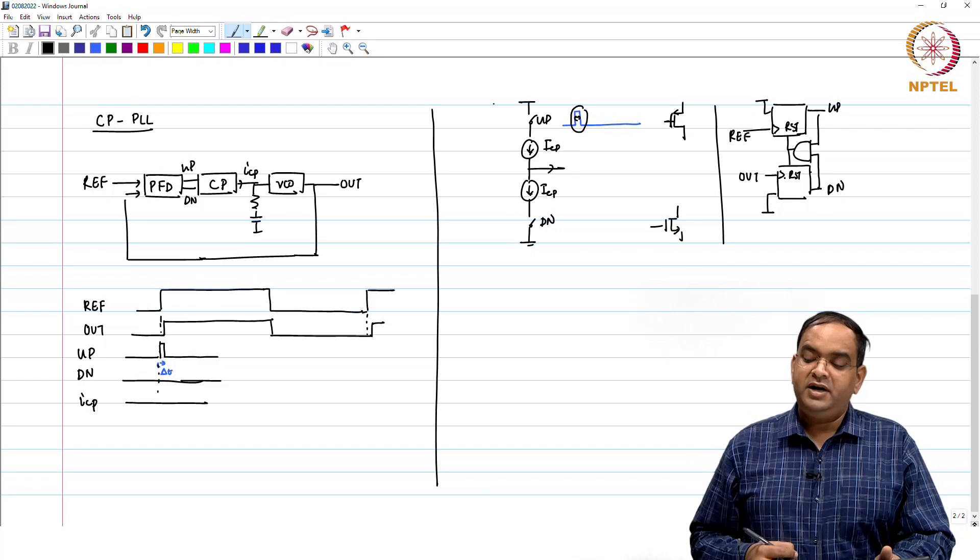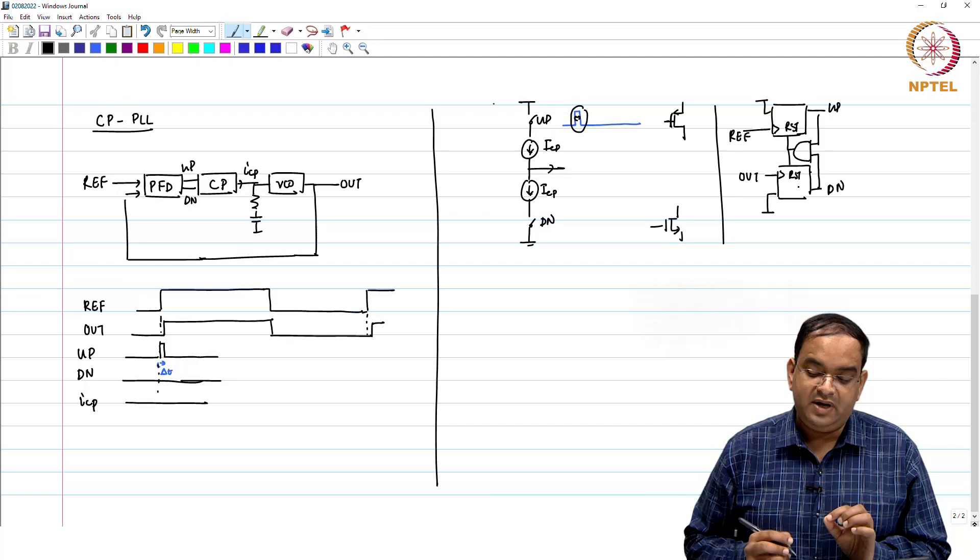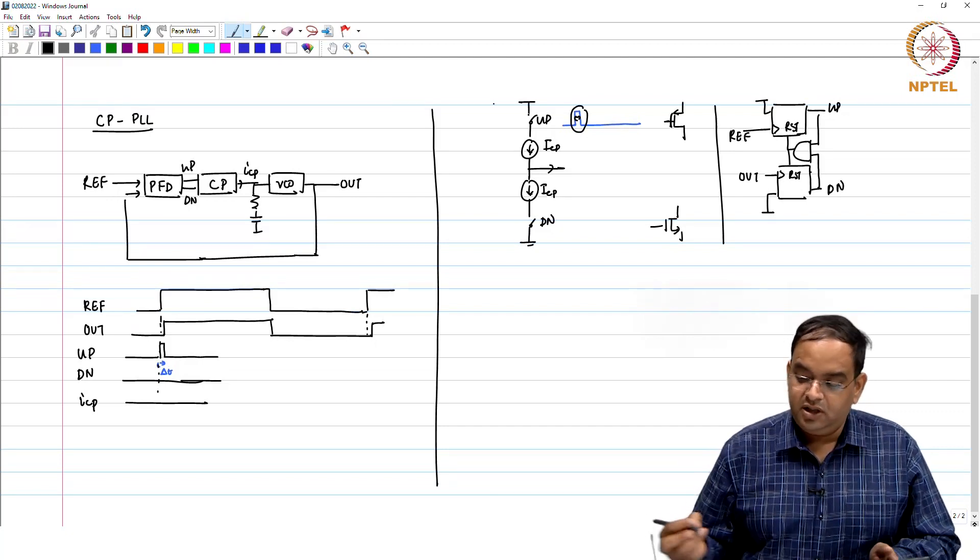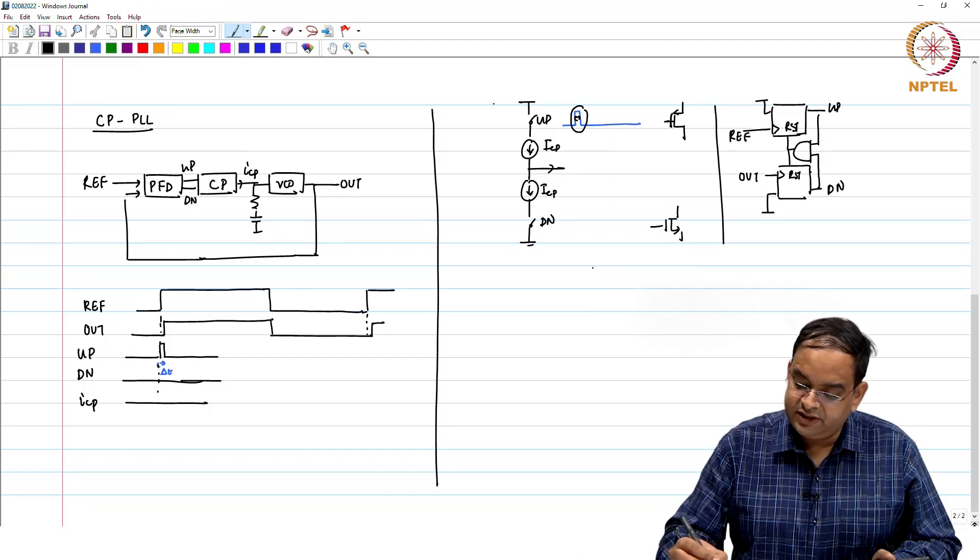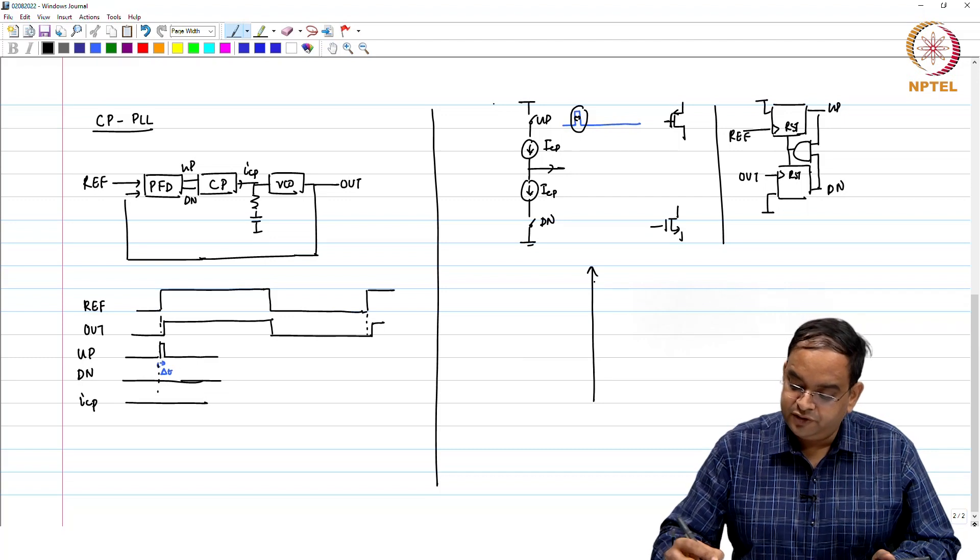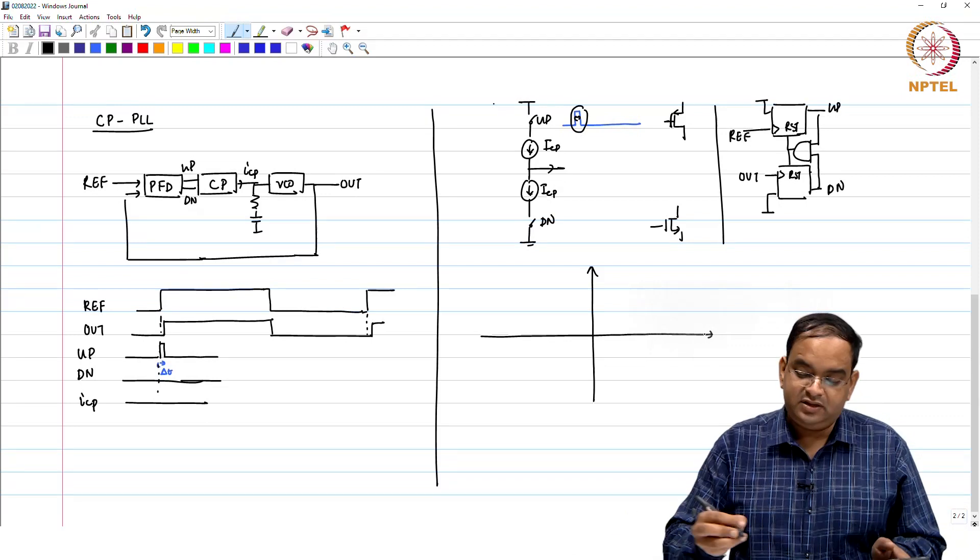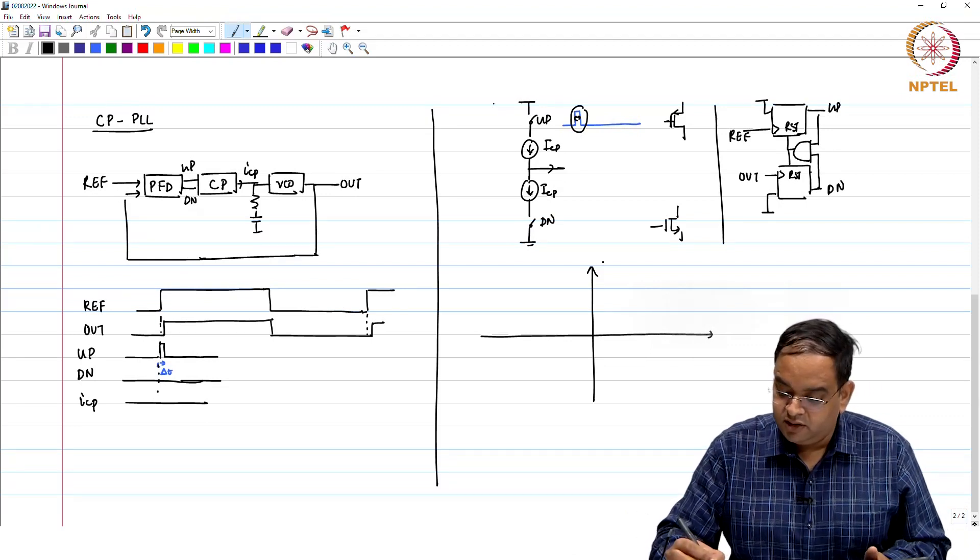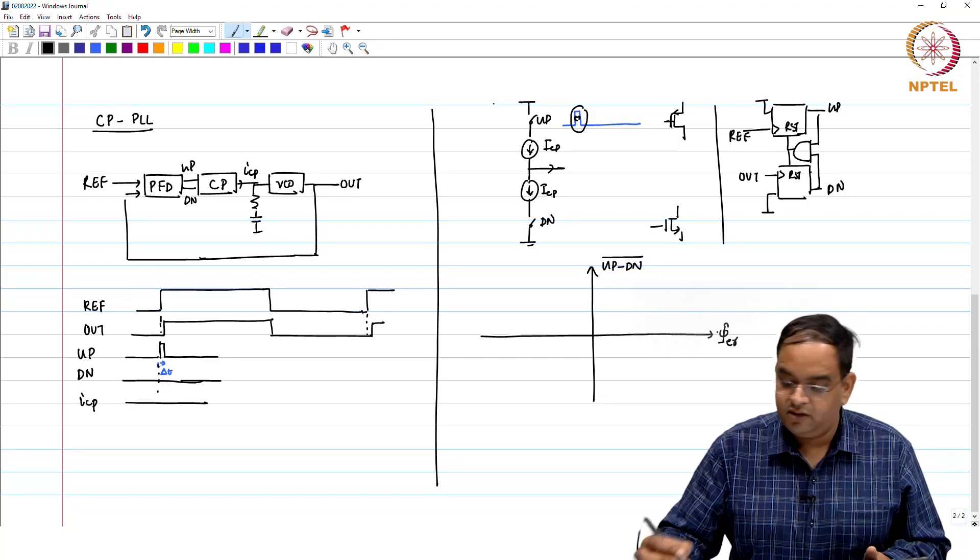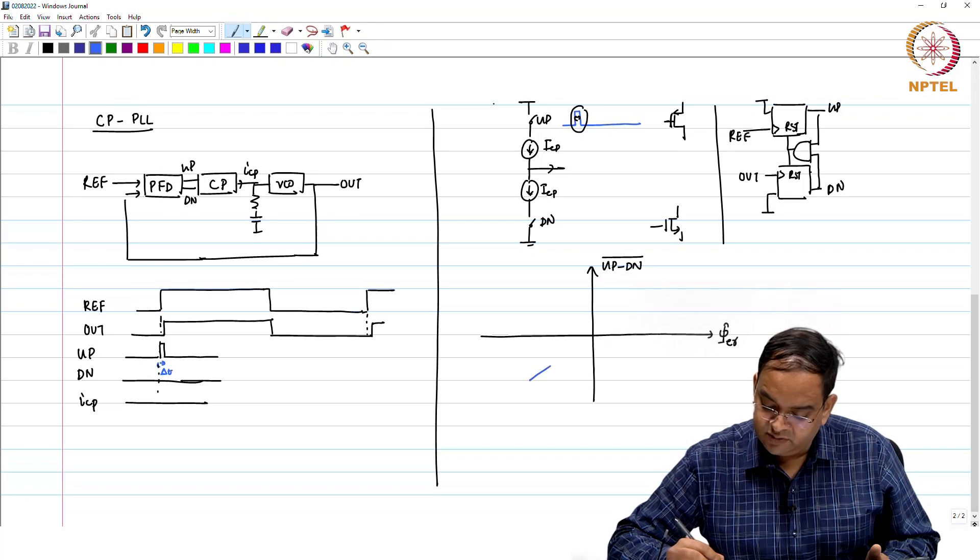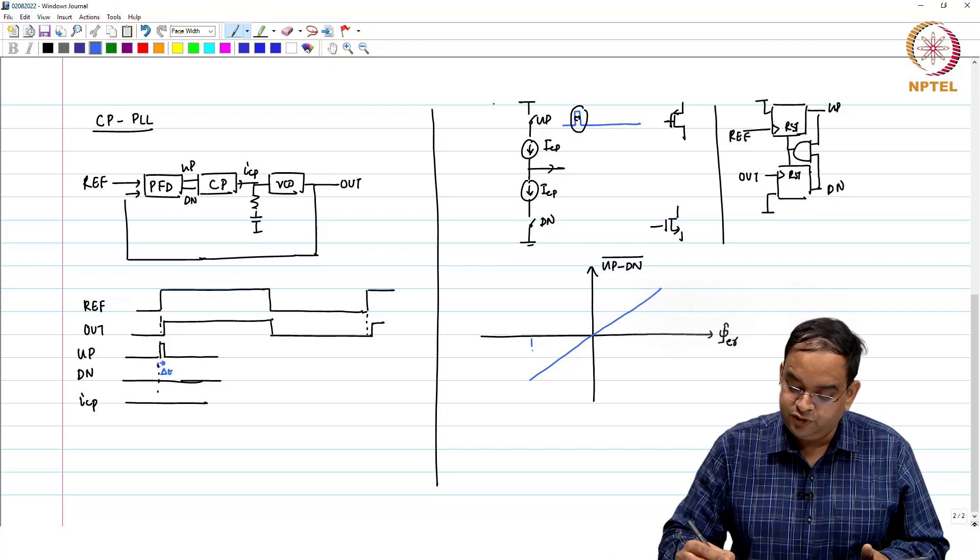The output of these blocks are up and down and they both were used to reset by the AND gate. The up and down pulses which we have here are so narrow in this particular implementation that your switch cannot turn on, which will now give a different characteristics for PFD plus charge pump.